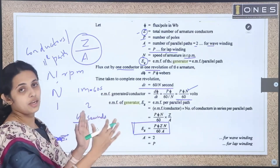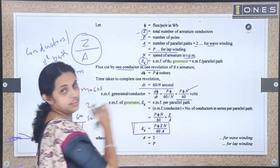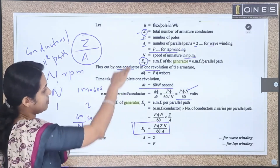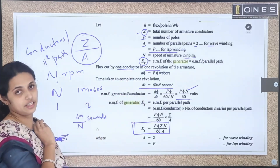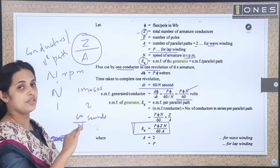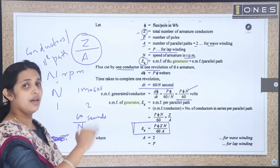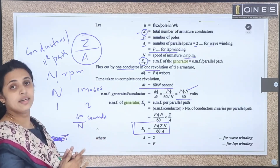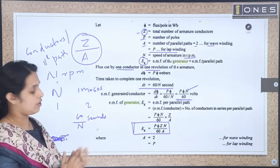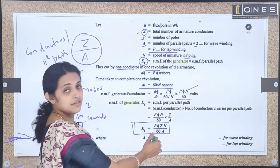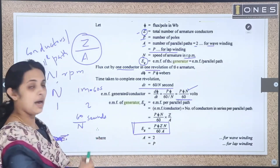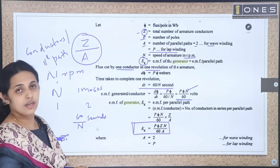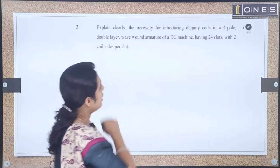So if you have a 3-mark question, we need to derive this equation. We have the inducing voltage, then in a parallel path we have the total number of conductors, and we get the total generated EMF. For wave winding, A equals 2; for lap winding, A equals P.